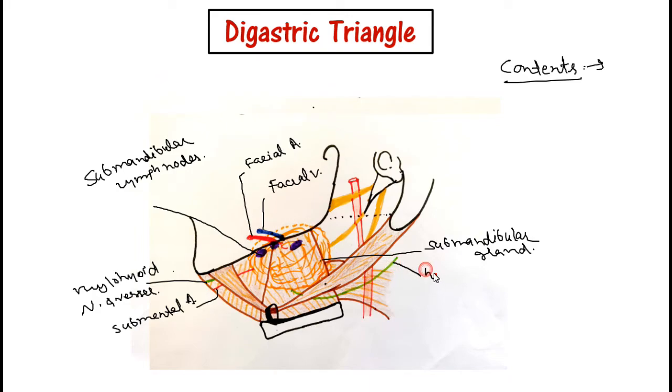In green you can see the hypoglossal nerve. On the posterior side we have the external carotid artery and the styloid process along with its three muscles.